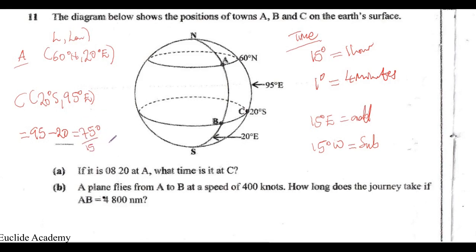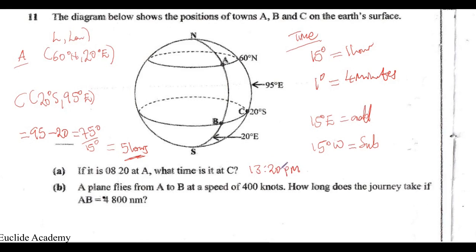Now we convert the 75-degree difference in longitude to time. Since 15 degrees equals 1 hour, we divide 75 by 15, which gives us 5. So the time difference is 5 hours. Since point C is east of point A, we add: 08:20 plus 5 hours equals 13:20. So the time at C is 13:20 hours.